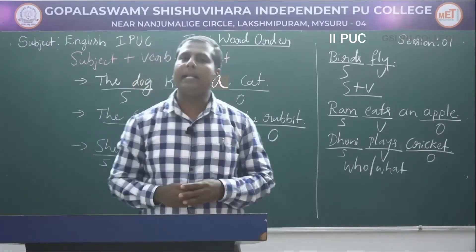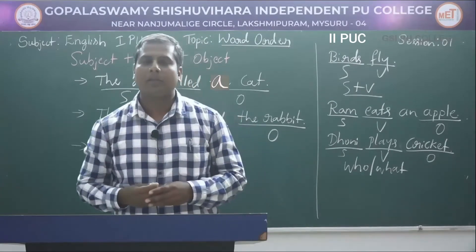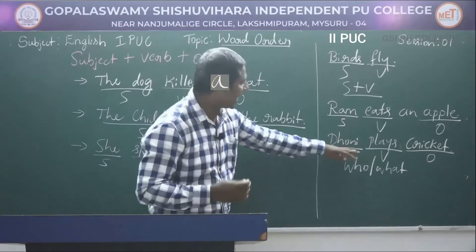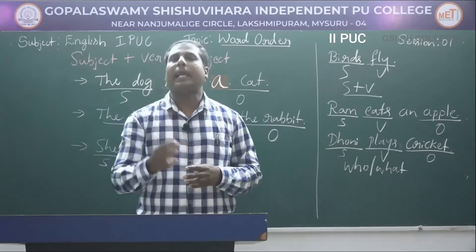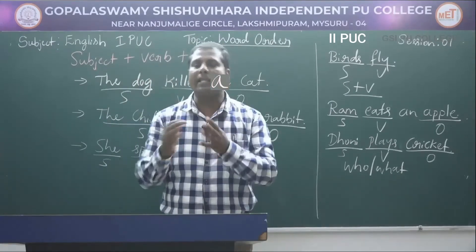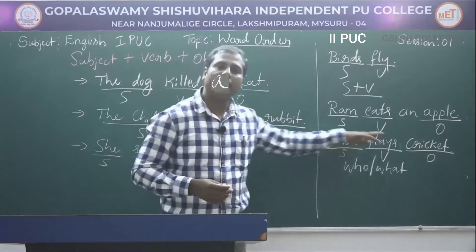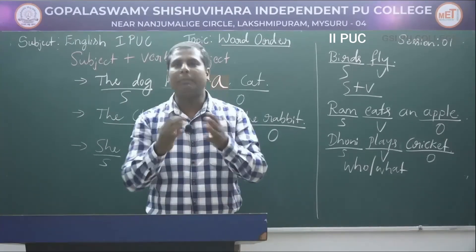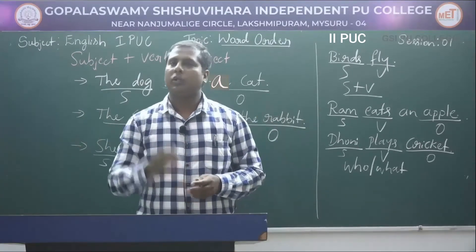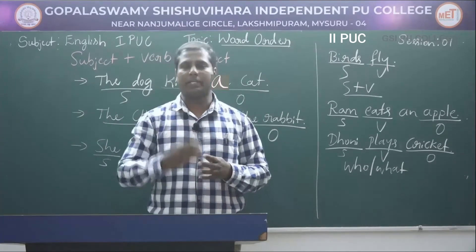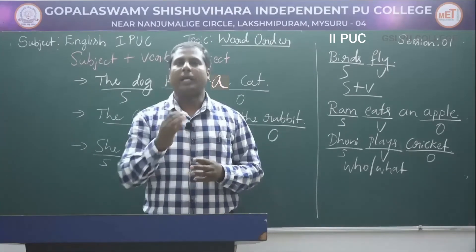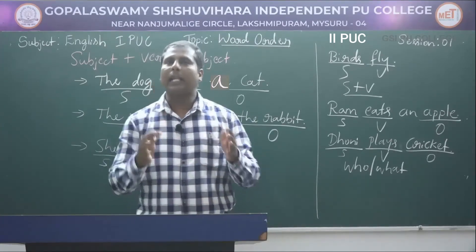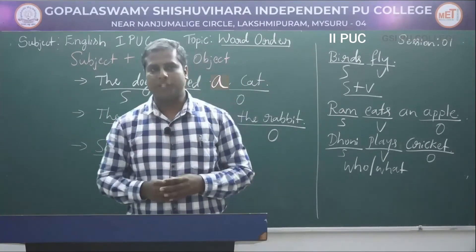The problem is that in many Indian languages like Kannada, Hindi, Tamil, Telugu, and Malayalam, the word order is subject plus object plus verb. In Hindi we would say 'Dhoni cricket khelta hai,' and in Kannada 'Dhoni cricket adu tane' — the verb comes at the end. But in English the verb comes in the middle, between the subject and the object. That is why mentally translating from your native language into English often produces errors.